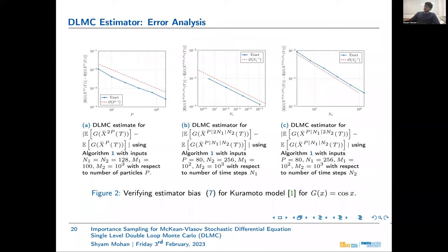We numerically verify this proposition for the bias: in each plot we keep two of the three parameters fixed and plot the bias against the remaining parameter, checking the convergence rates 1/P, 1/N1, and 1/N2. We use the Kuramoto model with the smooth observable cosine for this verification.